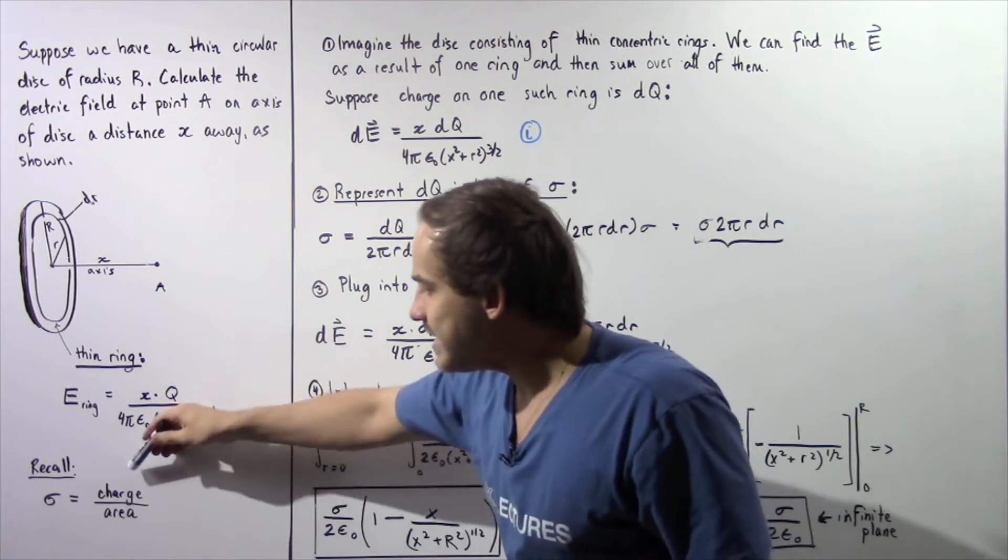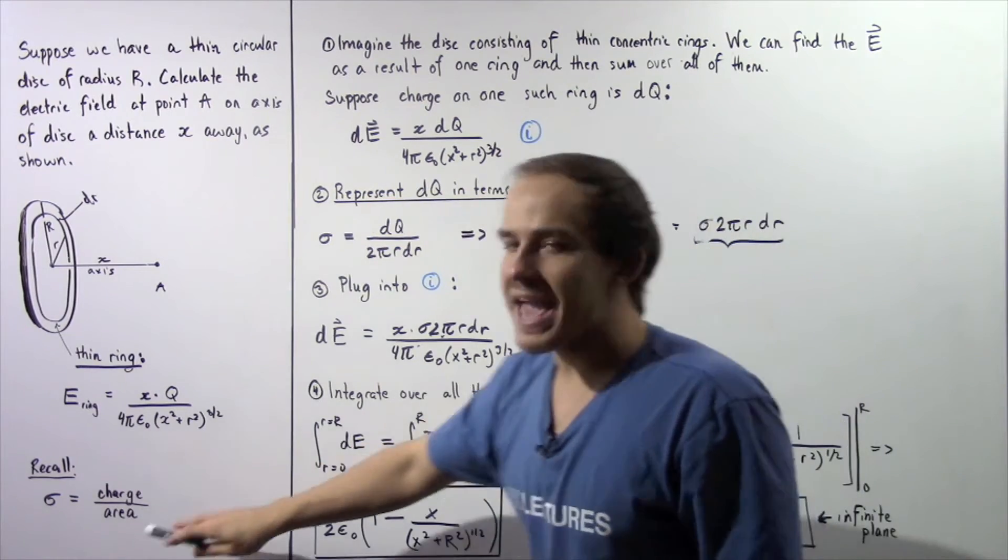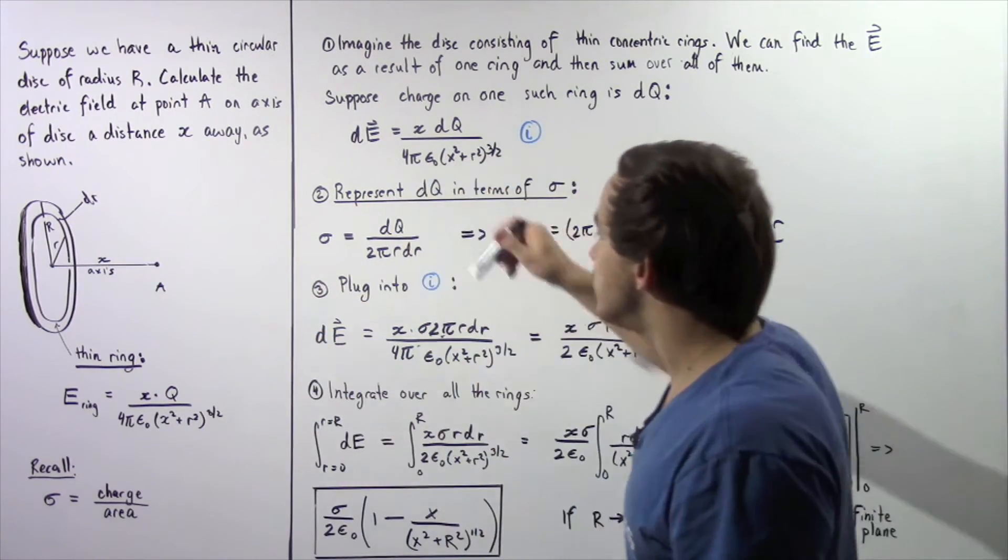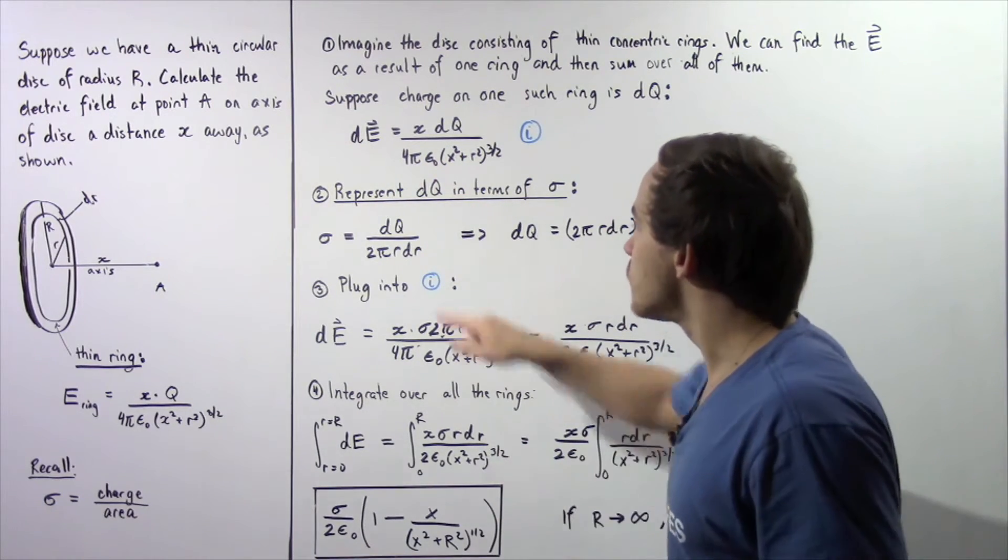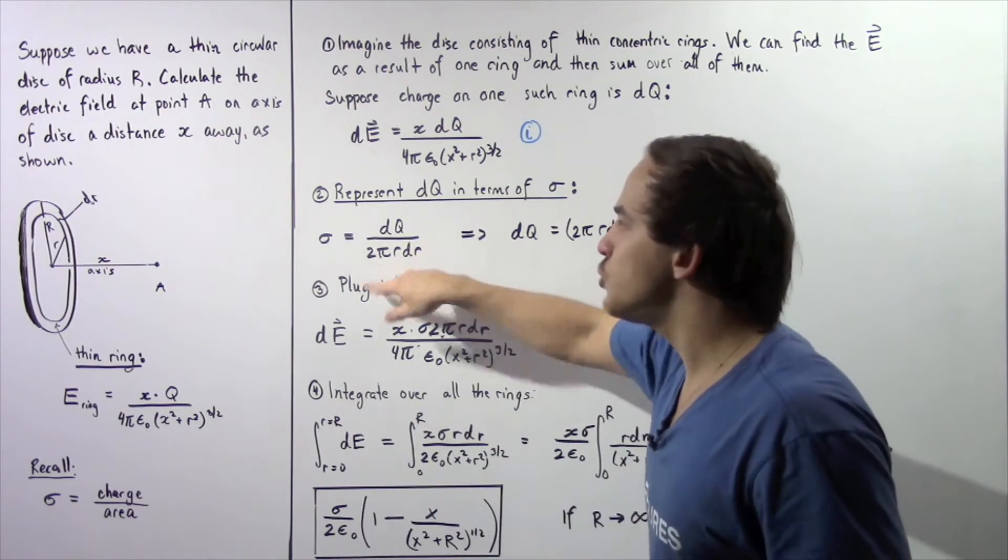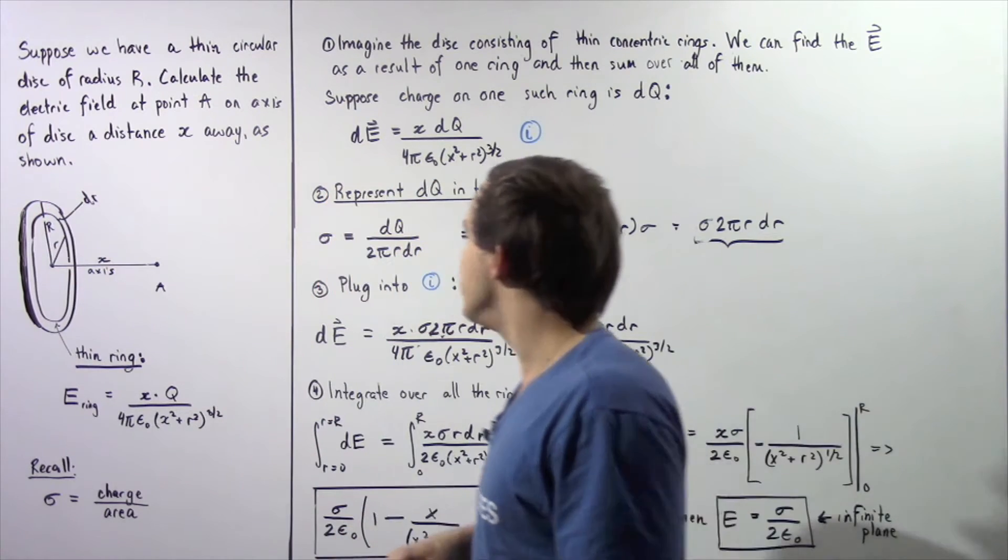Now sigma is simply equal to the charge, which is dq divided by the area. Now the area of this thin ring is given by 2 pi r multiplied by dR. Where dR is this quantity, and our 2 comes from the fact that we have two faces on the ring.